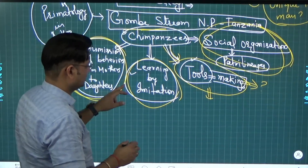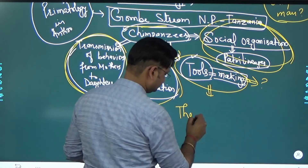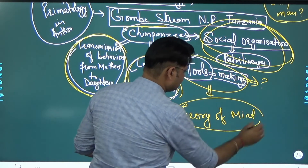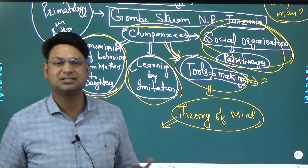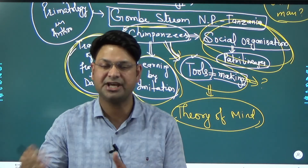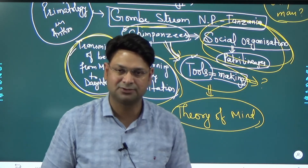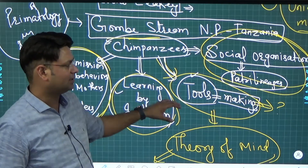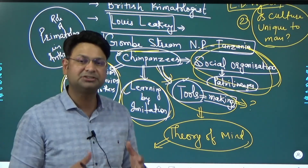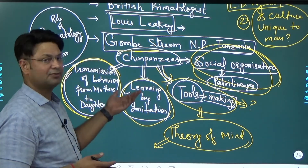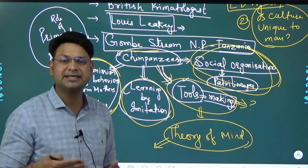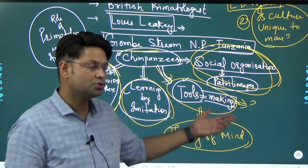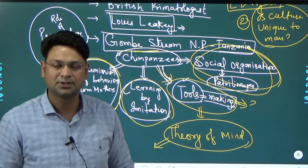Third, you can use this case study in the context of Theory of Mind. Theory of Mind says that we have a complex mind - we can learn, we can share, we can do complex tasks, we can reason logically. Do you not think that some level of thinking, understanding, and reasoning is required in tool making, learning, and transmission of behavior? So, you can use this same case study there also.